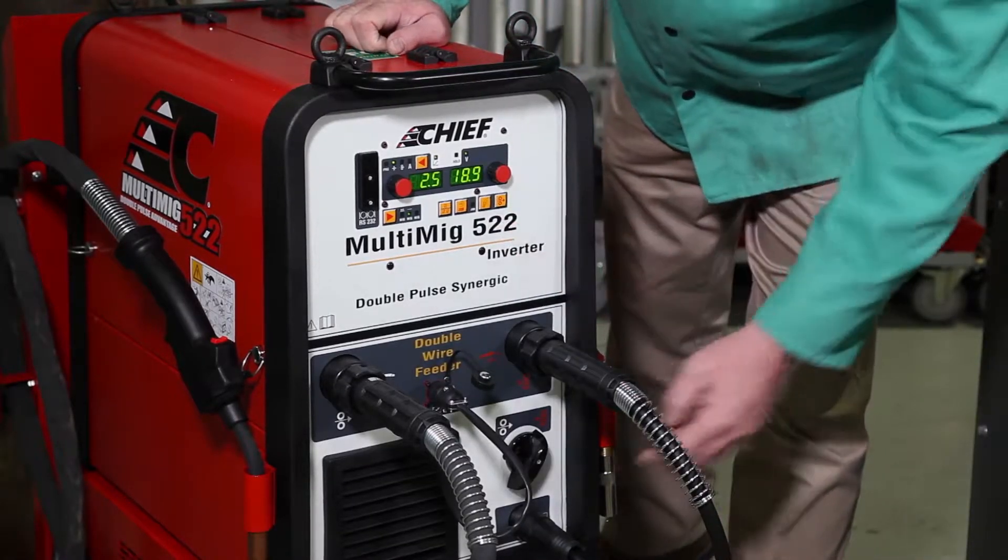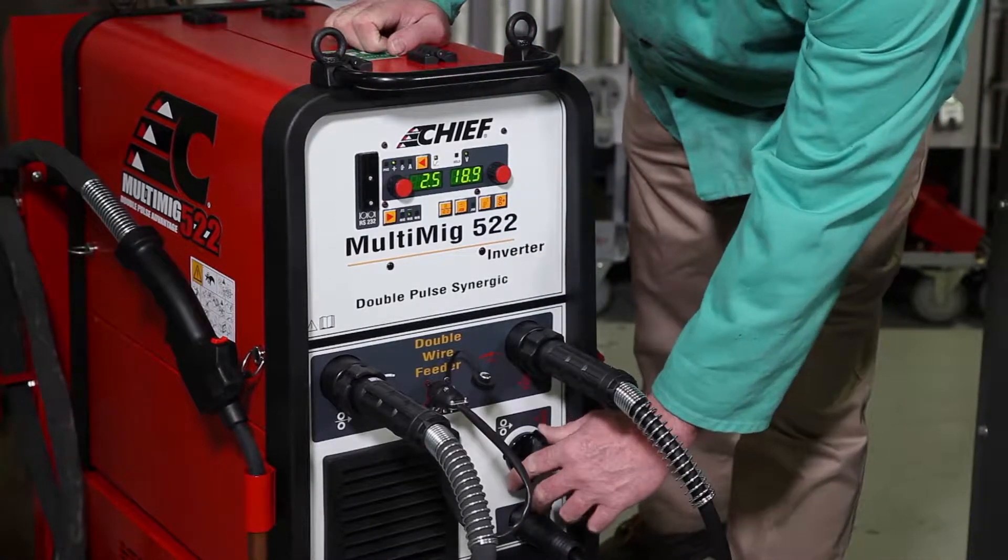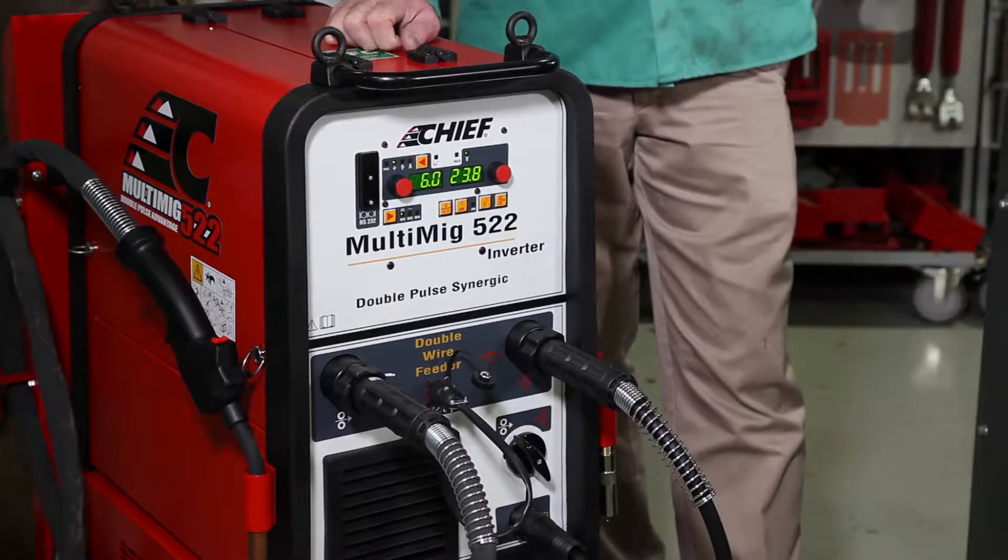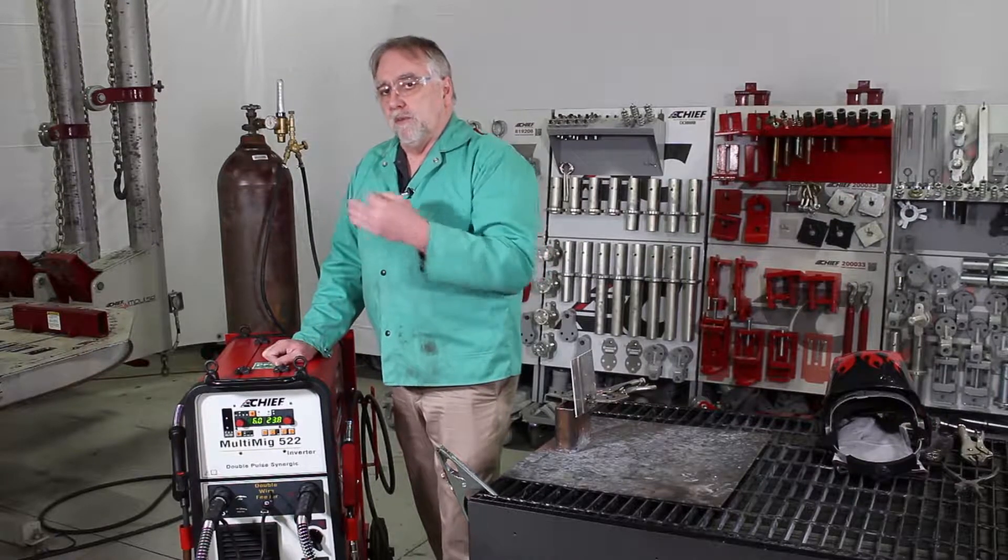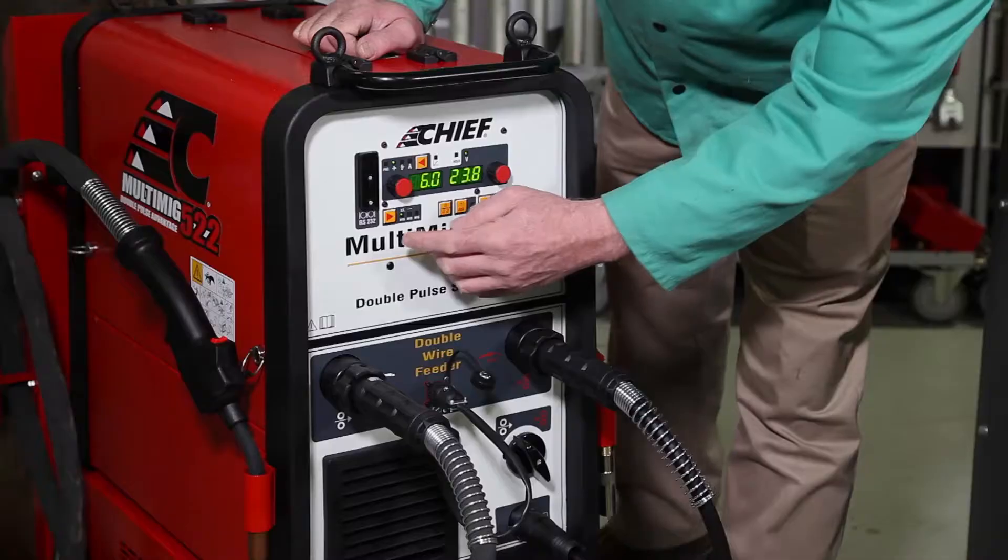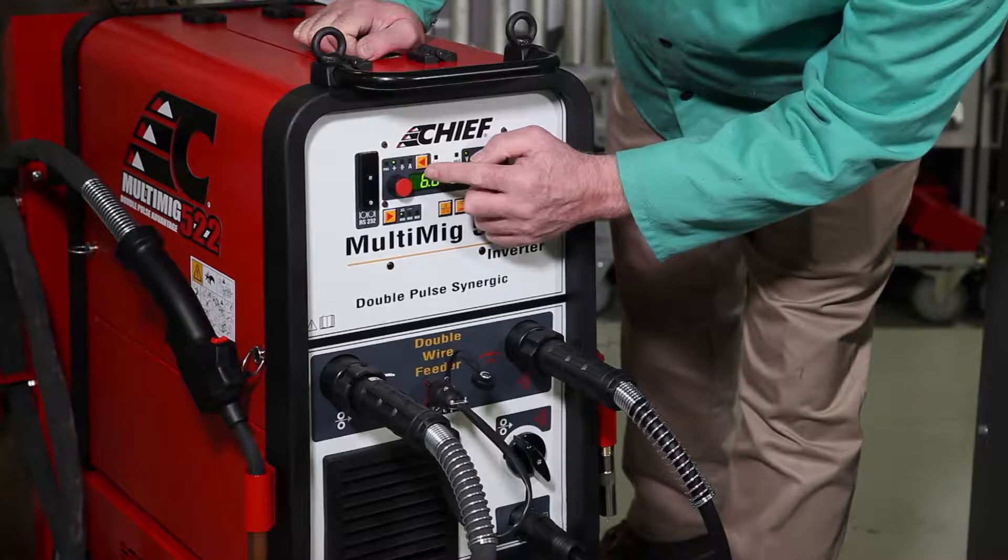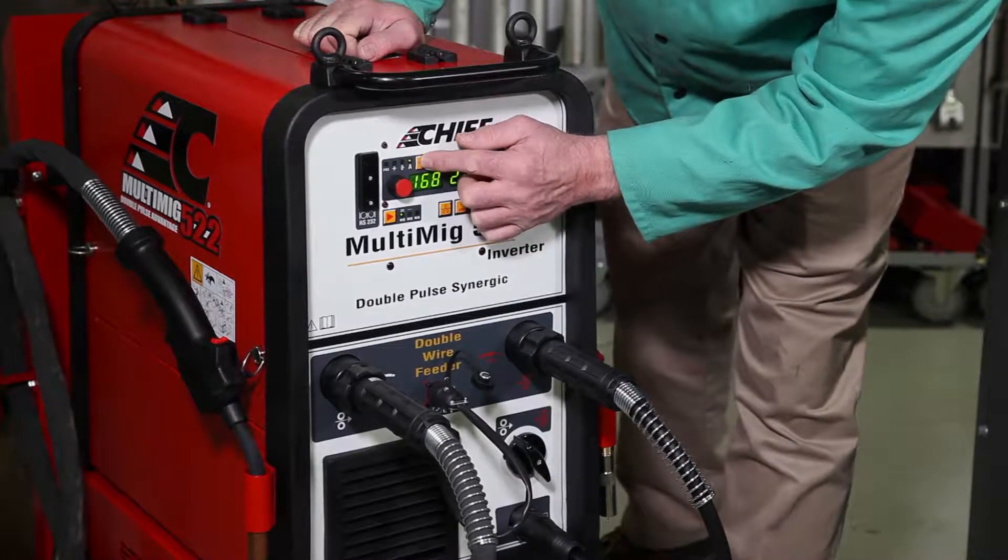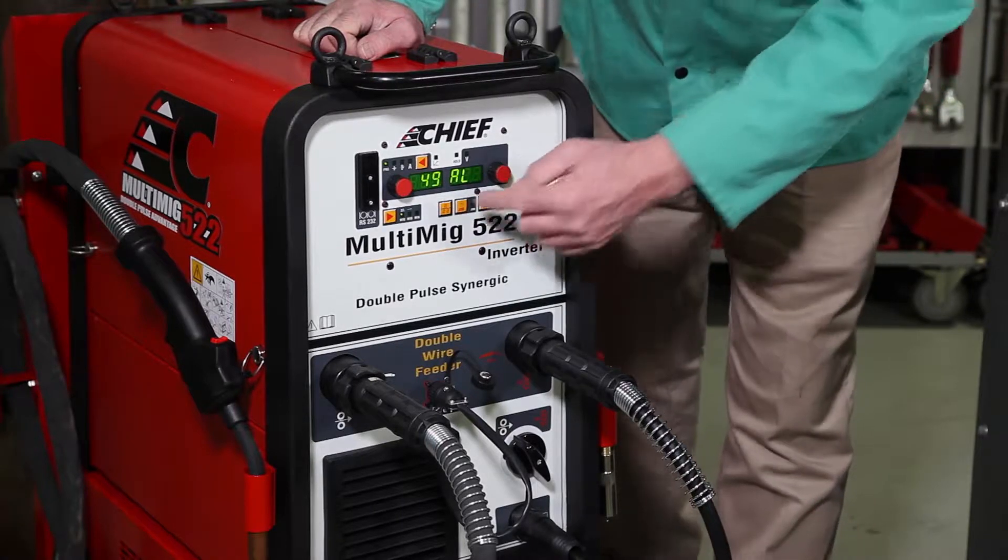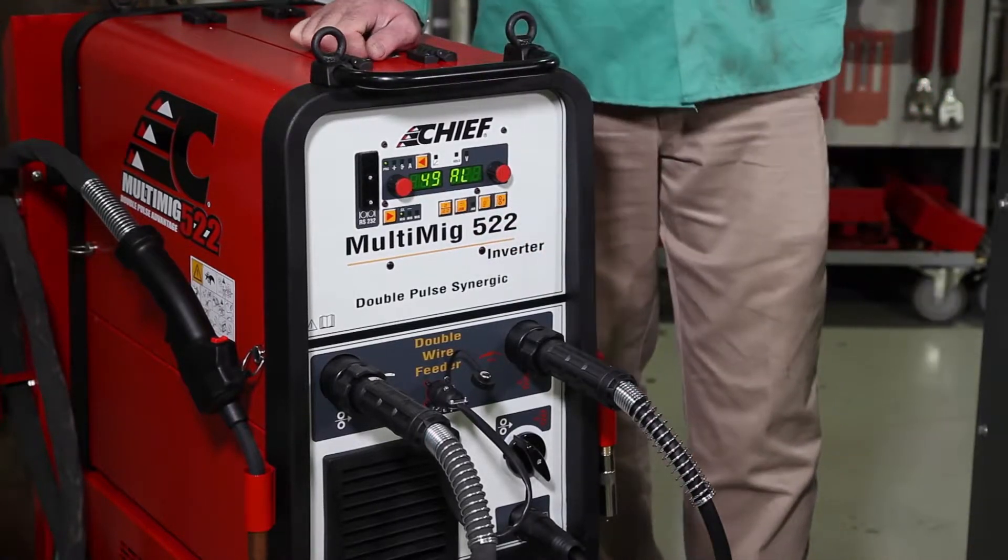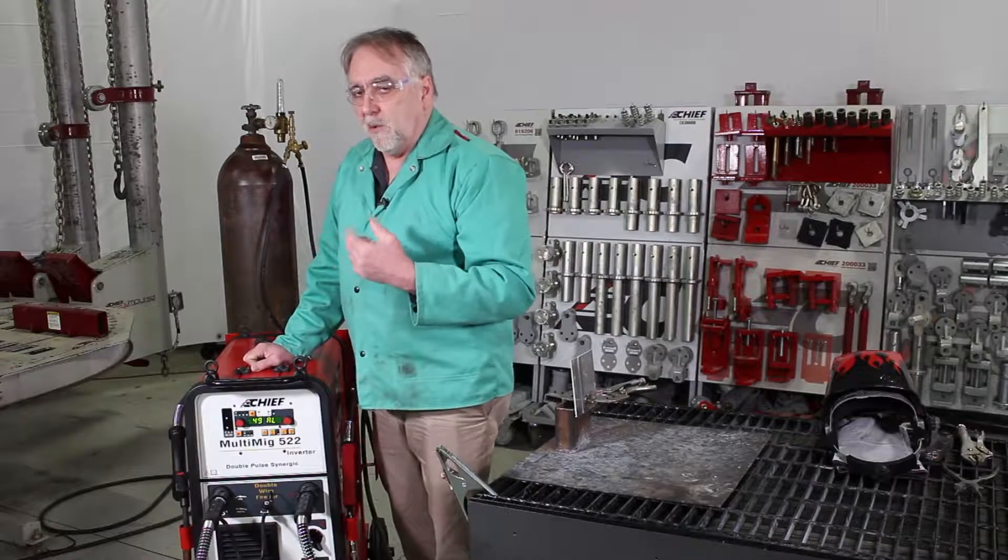The next thing we need to do is ensure that the switch on the bottom of the machine is set for the torch that we're going to be using. Next we're going to want to ensure that we are in the proper program for the wire we have in the machine. So we press the AE key until the program light lights up and it's telling us what program we're in. Here we are 49 aluminum. This is the correct program for the 5554 1.2 wire that we're using.